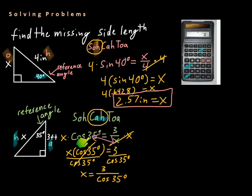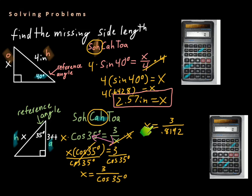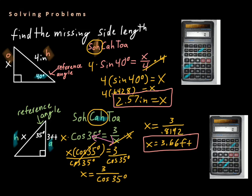So x equals 3 over cosine 35. We type 35 into the calculator and hit the cosine button — the one next to sine — and get 0.8192. So x equals 3 over 0.8192. Dividing that out, we get x equals 3.66 feet. Pretty handy.